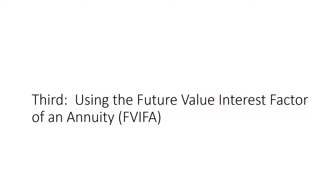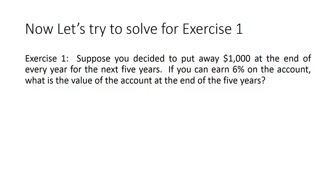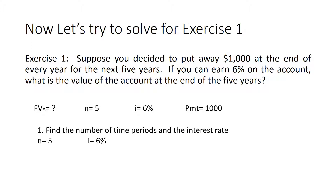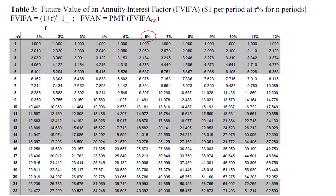The third and final part of this video is on using the future value interest factor of an annuity table. Note that the picture shown here is only a sample of the full table. Horizontally we have the interest rates, and vertically we have the number of time periods. For exercise one, the given values are n = 5 years and i = 6%. We find the corresponding number in the FVIFA table.